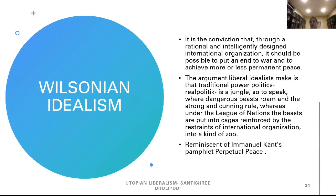Wilsonian Idealism is the conviction that through rationally and intelligently designed international organization, it is possible to put an end to war and achieve more or less permanent peace. The argument liberal idealists make is that traditional power politics — realpolitik — is a jungle: law of the jungle, might is right, survival of the fittest, where dangerous beasts roam and the strong and cunning rule. Whereas under the League of Nations, the beasts are put into cages reinforced by the restraints of international organization — in a kind of zoo. This is reminiscent of Immanuel Kant's pamphlet Perpetual Peace.